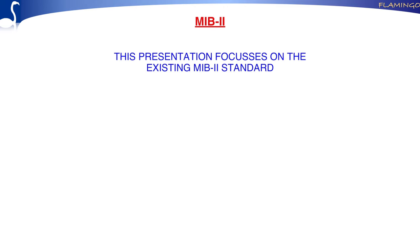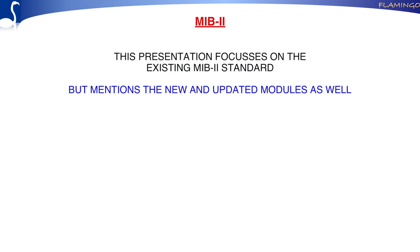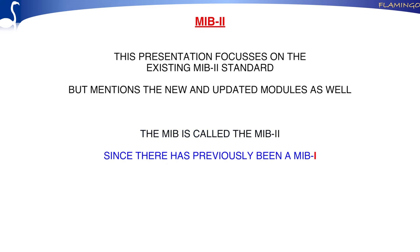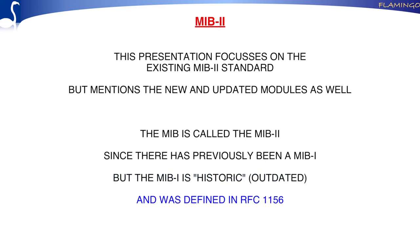This is the part we'll spend most of the time on — that's the MIB-2. I'm going to discuss the old MIB-2 but partly also the new modules that are based on this MIB-2. The number 2 is there because we also had a MIB-1, but that one is outdated — it's historic. It's defined here in RFC 11.5.6.